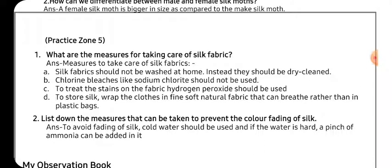Next is: list down the measures that can be taken to prevent color fading. To prevent color fading of silk, we should always wash it with cold water, which avoids color fading. Also we should not dry it in direct sunlight. And if the water is hard and not fit for washing, we can add a pinch of ammonia to wash the silk.